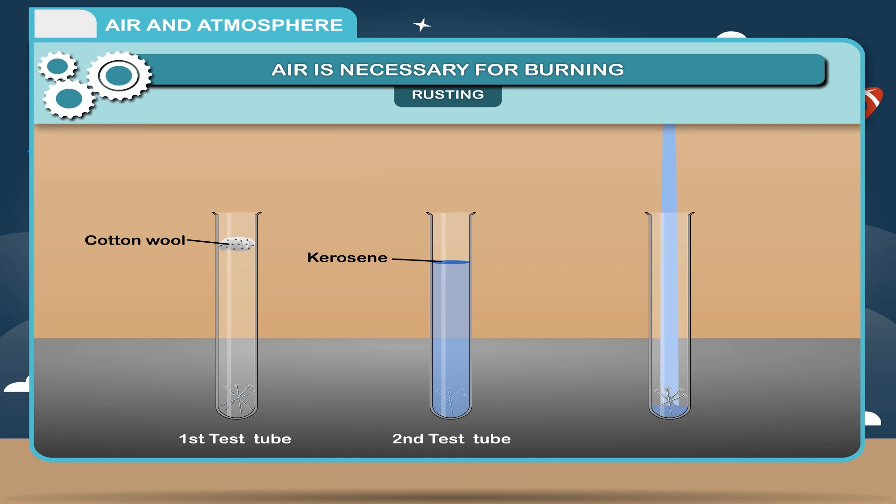Add little ordinary water in the third test tube. You will observe after few days that nails kept in the third test tube are getting covered with a brown coating called rust. While nothing happens to nails kept in first and second test tube.